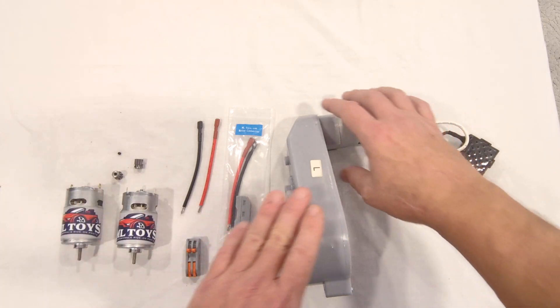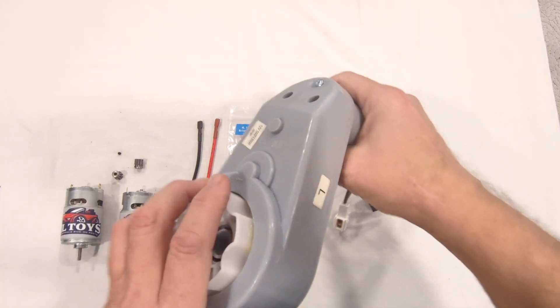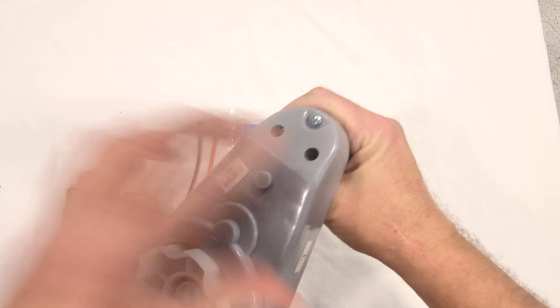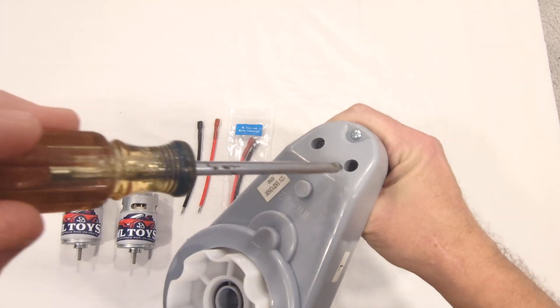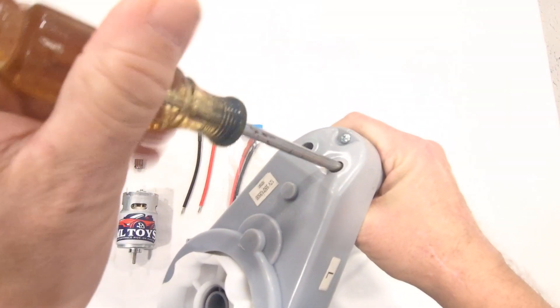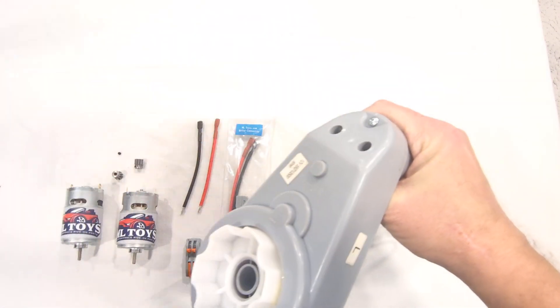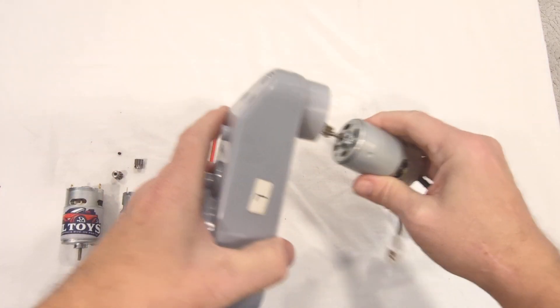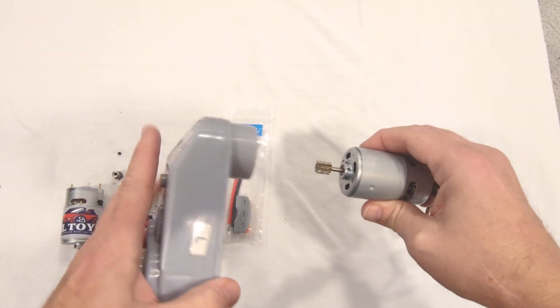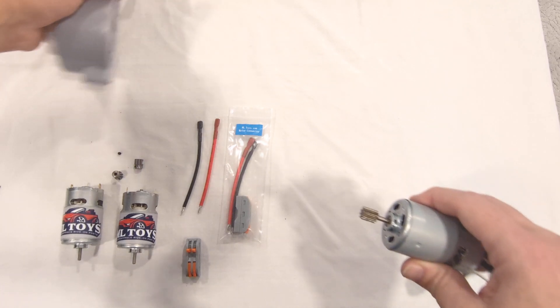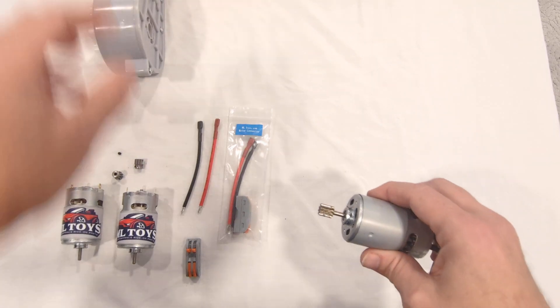First thing we want to do is remove the motor from your original gearbox. It's done with the two screws that are in these two holes here. We've already got them started to make this video less slow for you to watch. The motor comes out by loosening those two screws. We can set the gearbox aside for right now.